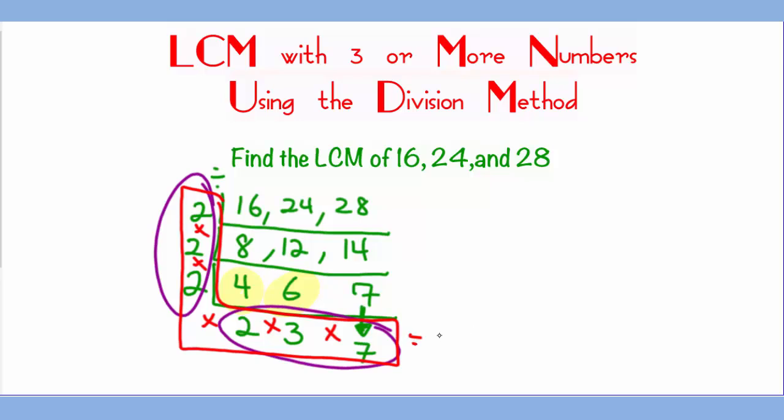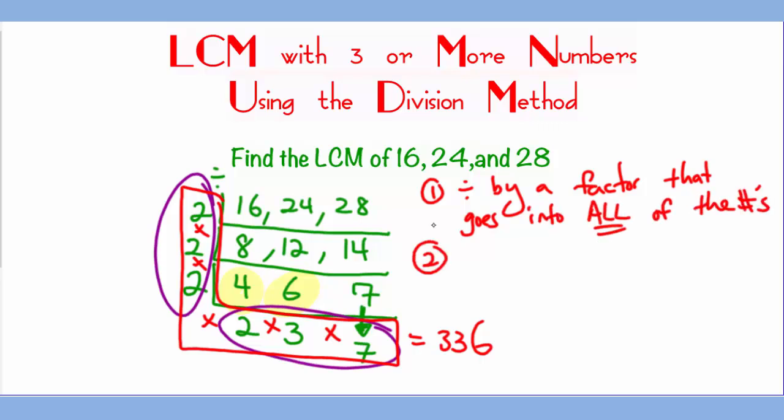To recap, you divide by a factor that goes into all of them. Now when you got to a point where there's no common factor that goes into all of them, you will look for a pair of numbers that has common factors and continue the process until there's nothing in common about the numbers.